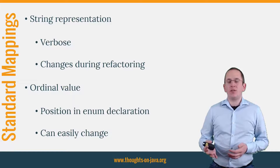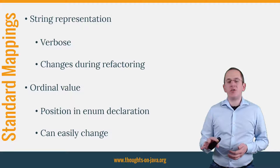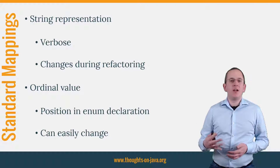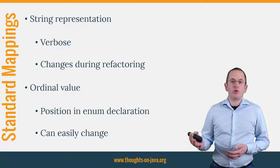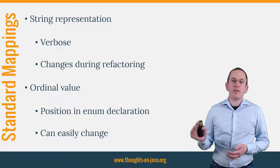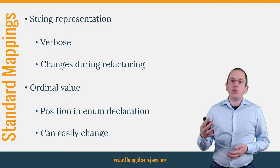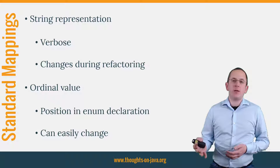The ordinal of an enum value is its position in the enum declaration. This value changes, which requires you to update your database when you remove an existing value or don't add new values to the end of the enum declaration.